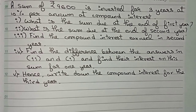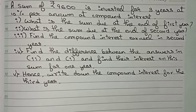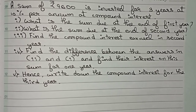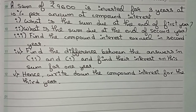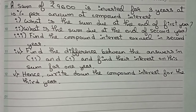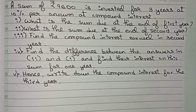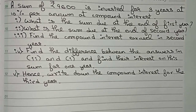Hello guys, welcome to this video. The question is: a sum of ₹9,600 is invested for three years at 10% per annum at compound interest. Question one: what is the sum due at the end of the first year? Question two: what is the sum due at the end of the second year? Find the compound interest in the second year, find the difference between the answers in question two and question one, find the interest on this sum for one year, and hence write down the compound interest for the third year. We will use the simple interest formula.